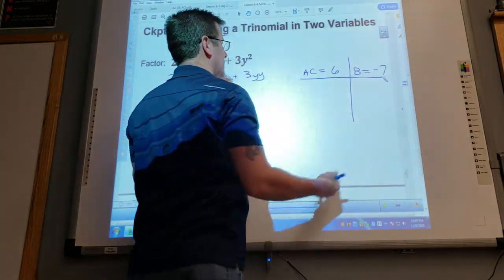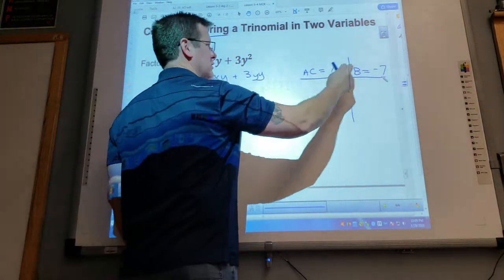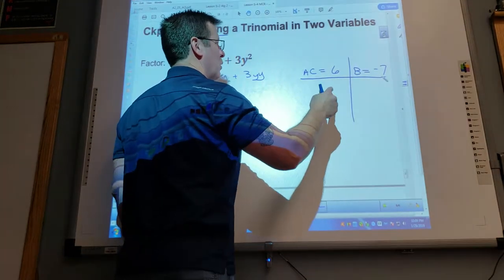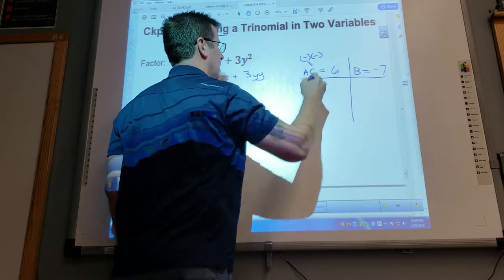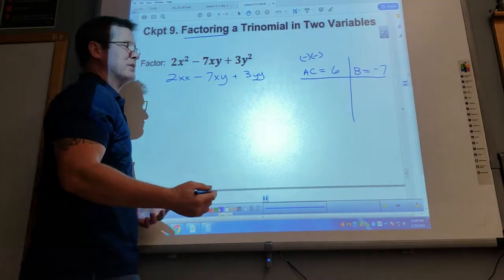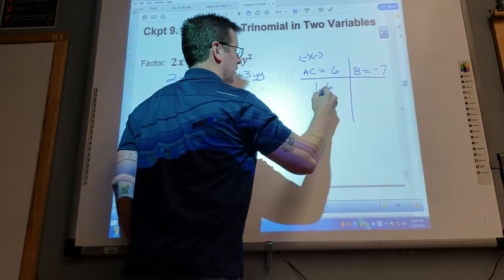Now, because I've got two numbers that multiply to a positive and add to a negative, that means they must both be negative. So think of the numbers that multiply to six: one and six, two and three.